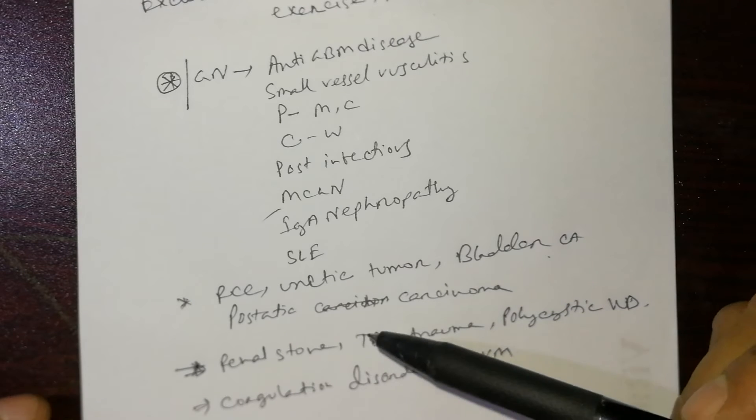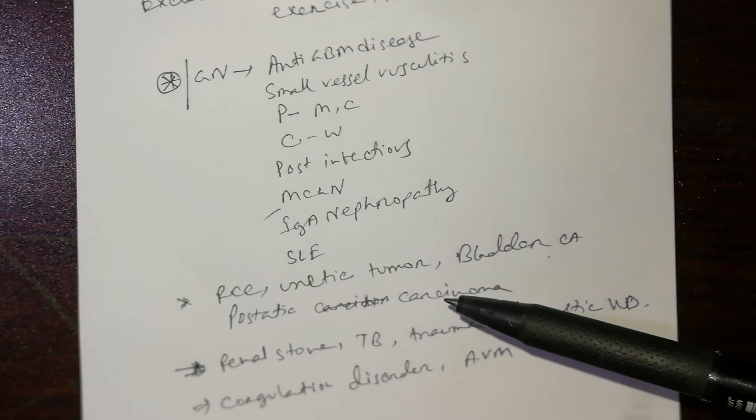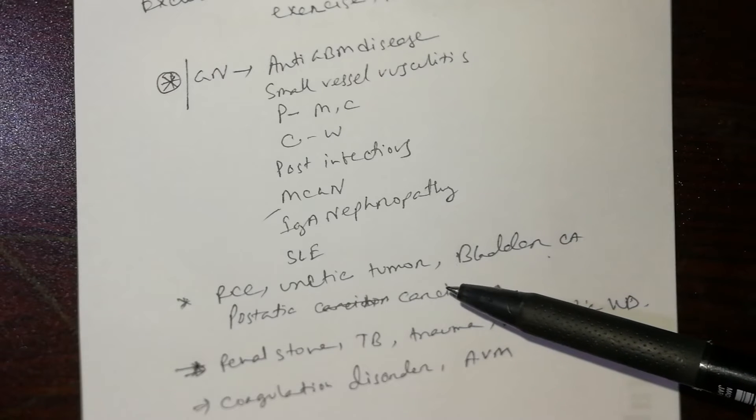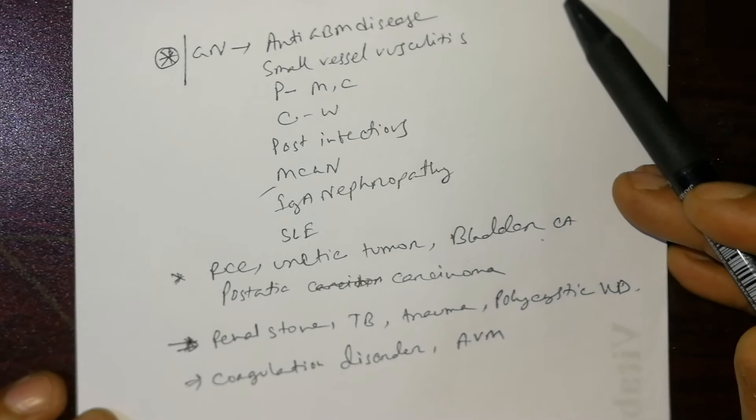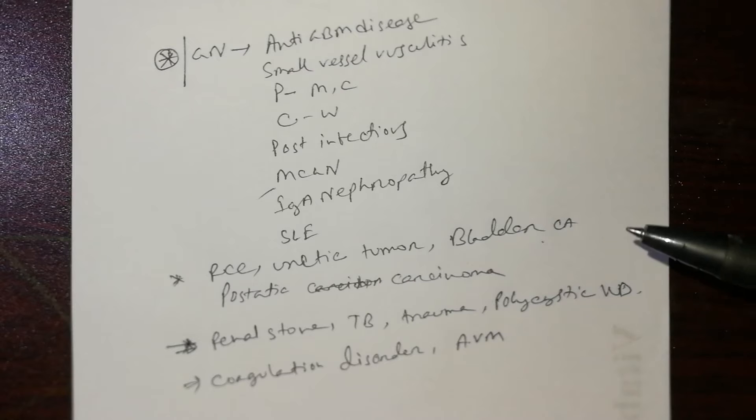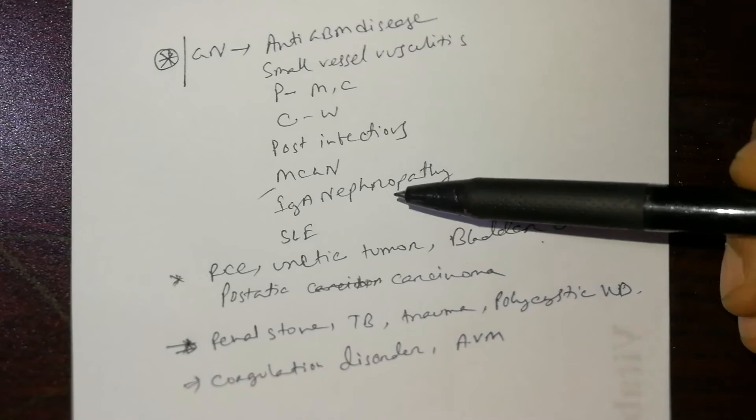Then investigate for renal cell carcinoma and carcinoma of the urinary tract that can kill the patient. Other non-essential causes include trauma, polycystic kidney disease, TB, renal stones, and coagulation disorders.